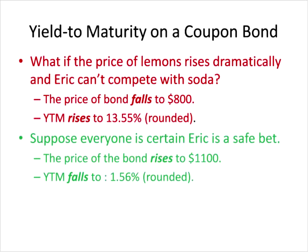What if immediately after this person buys the bond for $1,080, news comes across Twitter of a flash freeze in Florida devastating the lemon crop? Lemon prices soar, Eric's lemonade becomes too expensive to compete, people lose faith in his ability to repay, and the bond loses value. If someone buys it now for only $800, that person — if Eric is able to repay — would receive a yield of 13.55%. On the contrary, if Eric's parents say they'll cover his debts, he'd be considered a safe bet and the bond would be valuable again. If the market value goes up to $1,100, a buyer would receive only a 1.56% yield over the life of the bond.